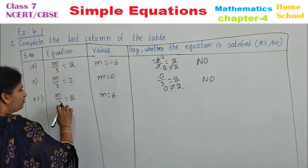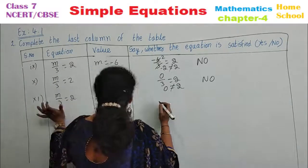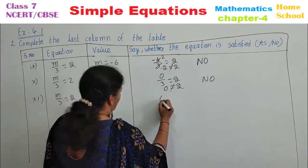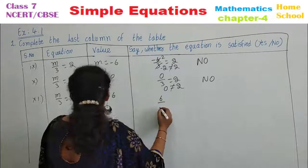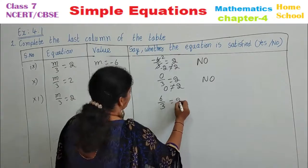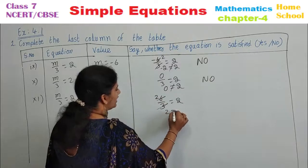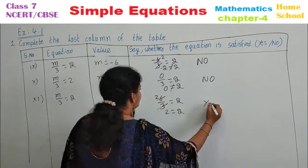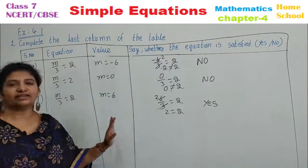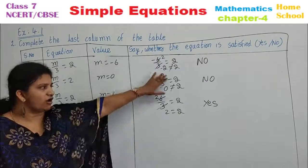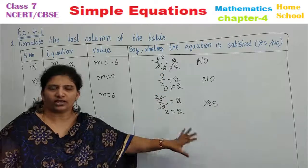Last one: m divided by 3 equals 2, with m equal to 6. Wherever you have m, substitute 6. 6 divided by 3 equals 2, and 2 equals 2. Yes — it is satisfied. Children, solve these in your rough notes and write only yes or no in your table.